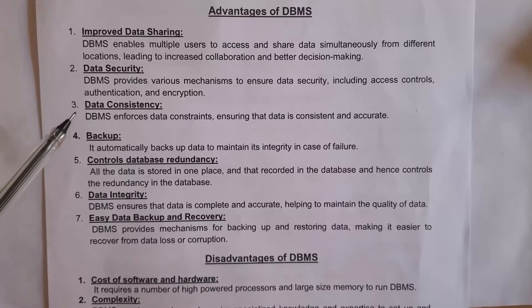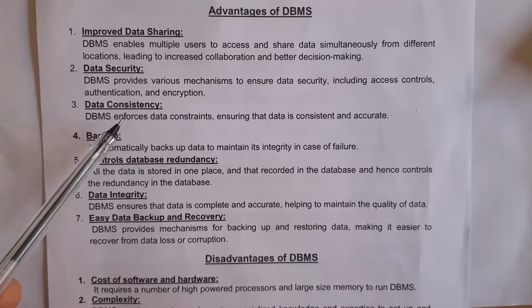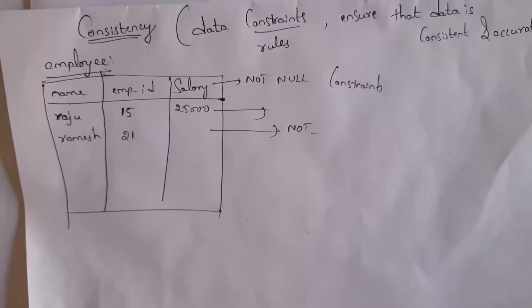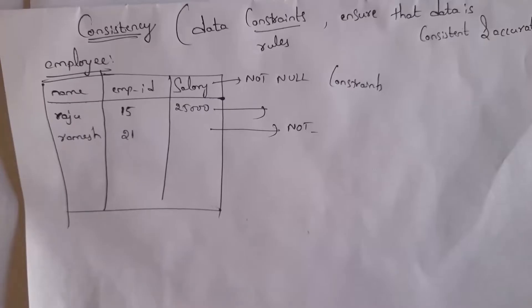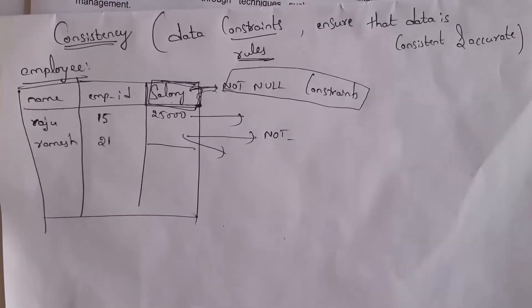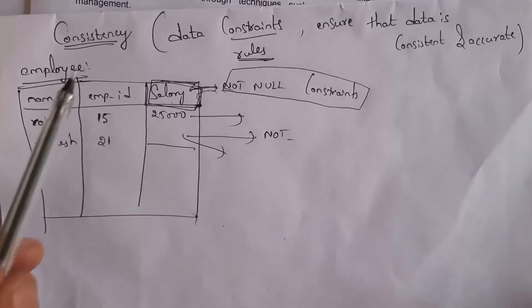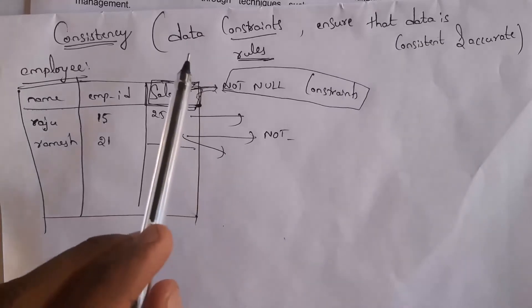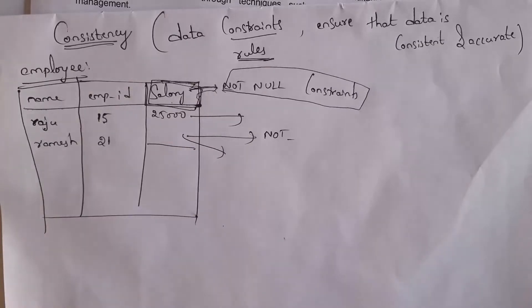The third advantage is data consistency. Consistency means correctness. In a database management system, we can apply data constraints. Constraints are nothing but rules. These constraints ensure that data is consistent and accurate. So data consistency — that is, the correctness of data — can be achieved by using data constraints in DBMS.